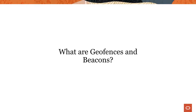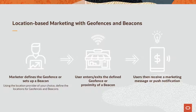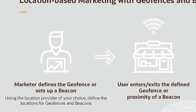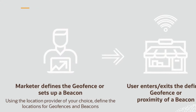So what are geofences and beacons, and why would you want them implemented in your mobile app? Geofences and beacons are technologies that enable marketers to implement location-based marketing to engage mobile users. Here's an example of how a geofence works. First, a marketer defines the areas of interest in which they would like to set up the geofence range.